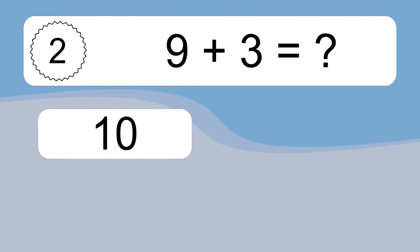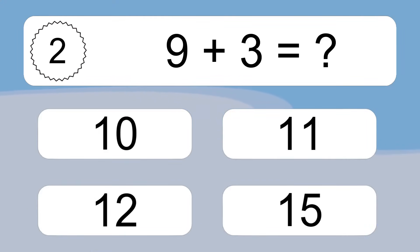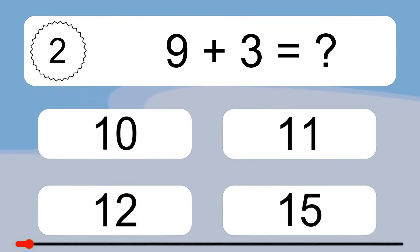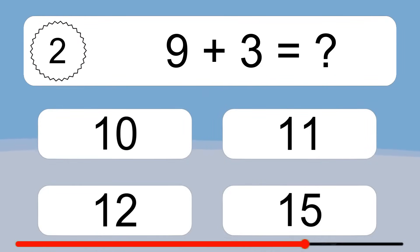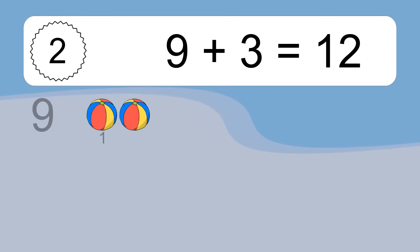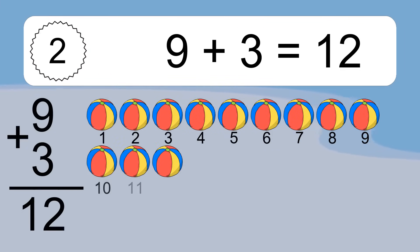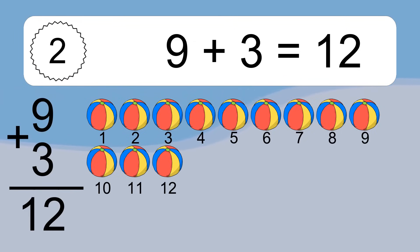9 plus 3 equals what? 9 plus 3 equals 12. Let's count it: 1, 2, 3, 4, 5, 6, 7, 8, 9, 10, 11, 12.